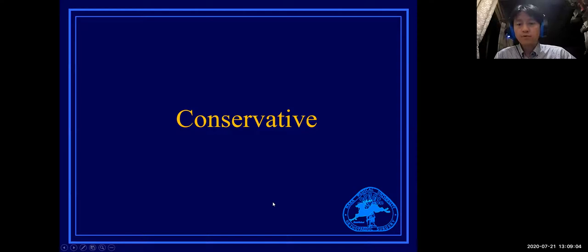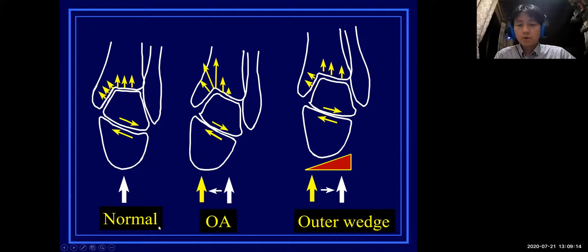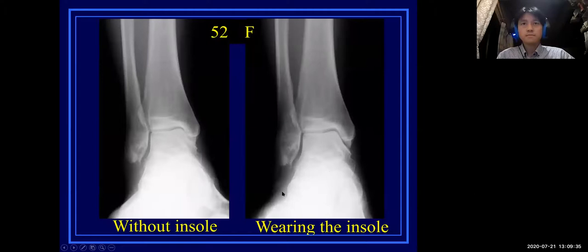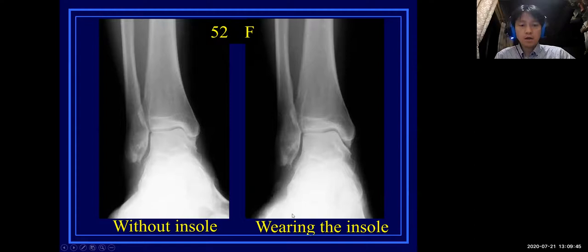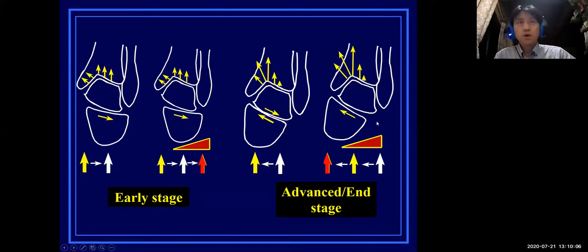Conservative treatment is applied as the first choice. An outer wedge insole is appropriate for the early phase of disease. In the OA ankle, the load axis shifts to the medial side, and the outer wedge insole sets it back to a normal position. You can see the medial concentration of load in the bare foot and relief with insole usage. However, it is limited to early-stage patients — in advanced or end-stage patients it will show negative results.